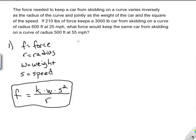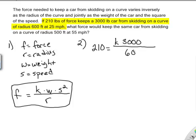So let's go to step two. And that's where we get our next sentence here. If a 210-pound force, so f is 210, and remember, now we're solving for k, so I put my k up here. 210 pounds of force is required to keep a 3,000-pound car, so that is our weight from skidding on a curve of radius 600 feet. So our radius is 600 feet at 25 miles per hour. So we have times 25 miles per hour, but of course, in our variation equation, that 25 miles an hour is squared.